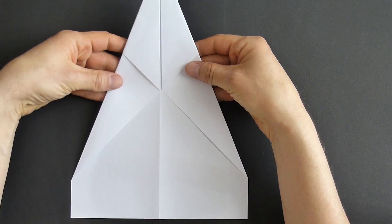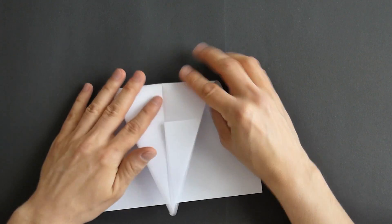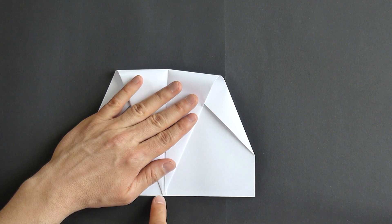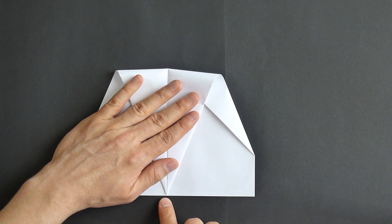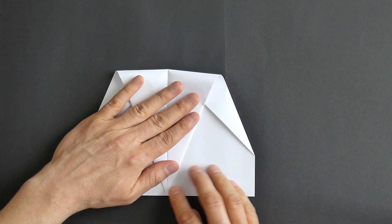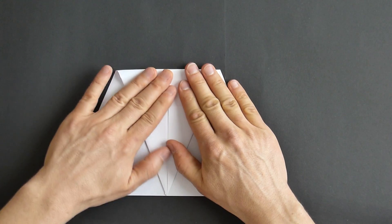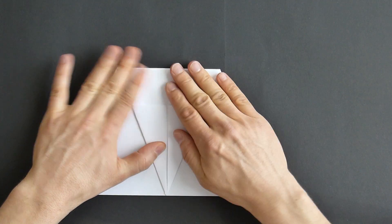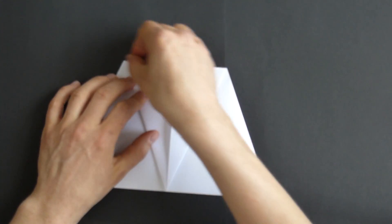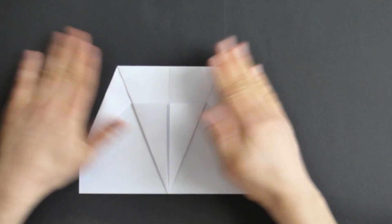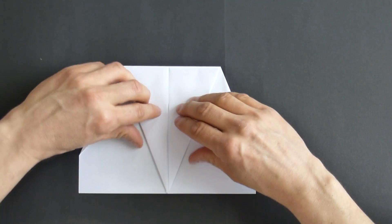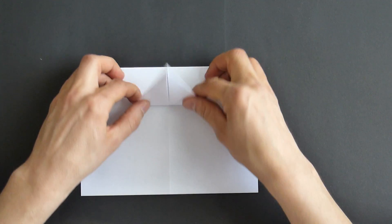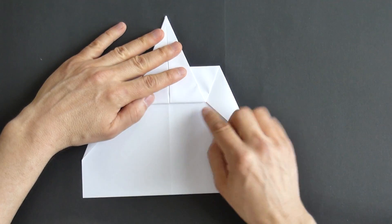Then you fold it downwards, like that. Make sure that arrow meets that fold in the middle. And then you use this line. This is the way you make the other fold.